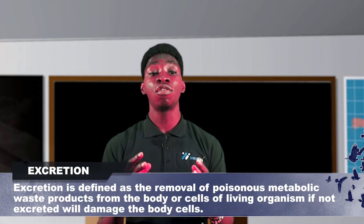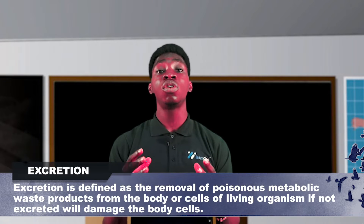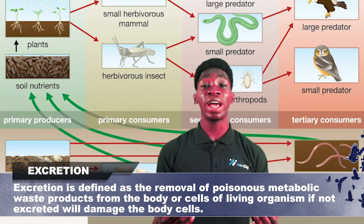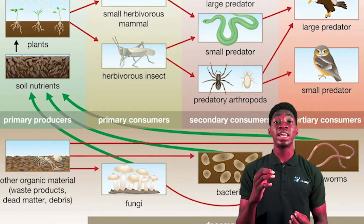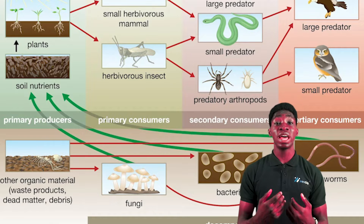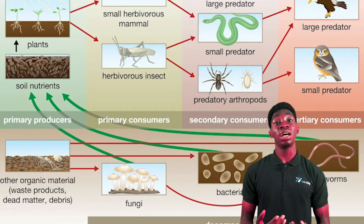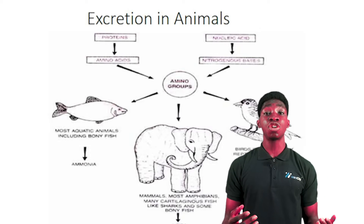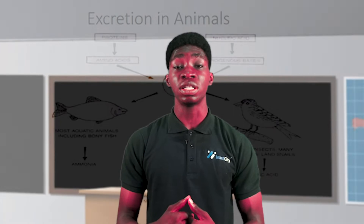Excretion is the removal of metabolic waste products from the body or cells of a living organism. Waste products, if not removed, will be harmful to a living organism. For example, excess water could come out as urine or sweat, and excess food and other substances could come out as feces. This is another characteristic of living things — even plants excrete by removing their own metabolic waste products.